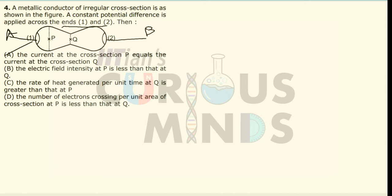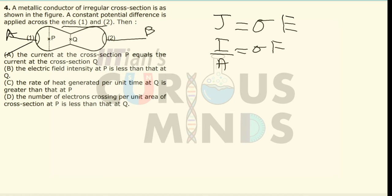We have to find out the electric field intensity at P and Q and verify whether E at P is less than that at Q. The current density J equals sigma times E, and also J equals I divided by A equals sigma times E. Since the area at P is more than the area at Q, the electric field intensity at P will be less than at Q. So the second statement is also correct.